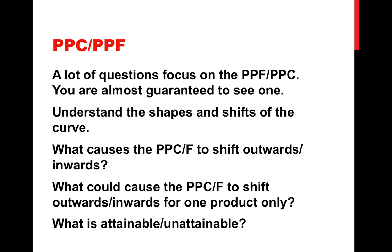The PPC or PPF — you're pretty much guaranteed to get a question on this. Understand the shapes: the one that's curved outwards versus the straight line, representing increasing and constant opportunity costs. Understand why it would shift — what factors would cause it to shift outwards or inwards. Any increase in the quantity or quality of the factors of production should shift it outwards, and any decrease would shift it inwards. Also think about a scenario where a new PPC starts at the same point for good A but quantity produced increases for good B — what would that tell you?